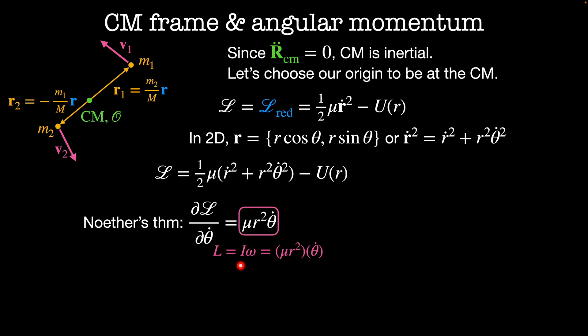It turns out that this quantity is just angular momentum. We can see this by writing angular momentum as the moment of inertia, which equals μ r squared times ω, which is just equal to θ dot. That means that the angular momentum, which I'm going to call little l, is conserved in this system. And we'll be using this definition of angular momentum many times in the next few videos.